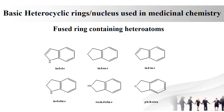First of all, what is a fused ring? In a fused ring, two different types of rings are fused with each other. For example, the first one is indole, in which a benzene and pyrrole ring are fused with each other. The drug indomethacin contains the indole ring.